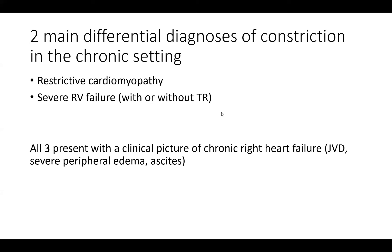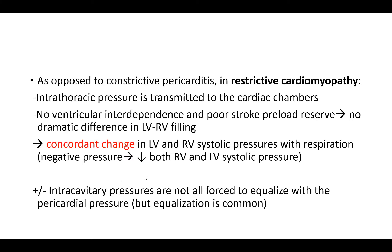By far the most common mimicker of constrictive pericarditis is severe RV failure and/or severe tricuspid regurgitation — this is the most common mimicker. All three clinical diagnoses will have a similar clinical picture: JVD, basically a picture of right heart failure, ascites, and severe peripheral edema.